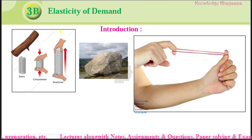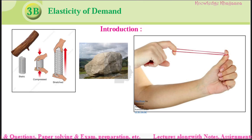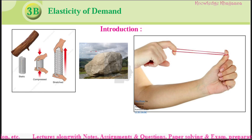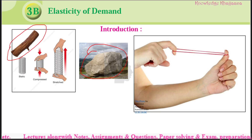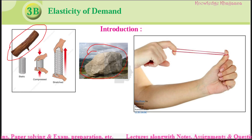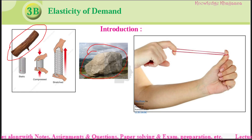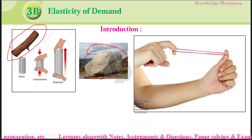What is meant by elasticity? For example, consider this item — a stone. Can a stone be stretched? Can it be flexible? Or this piece of wood — can it be stretched? No. Because those are static. This stone and this wood are static; those cannot be stretched or responsive to any other variable.